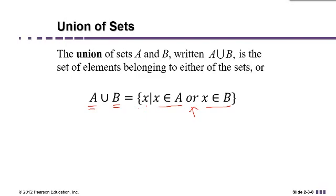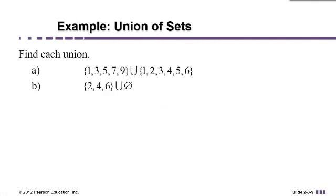It could be in A or B or both, by the way. It could be in A or B or both and it's still going to be in the union. We're putting the whole thing together into one big set. So for example, if we have {1, 3, 5, 7, 9} union with {1, 2, 3, 4, 5, 6}, then it's good to be organized about it. So it would be a good idea to go maybe in numerical order.